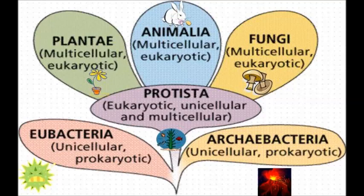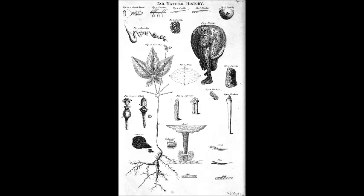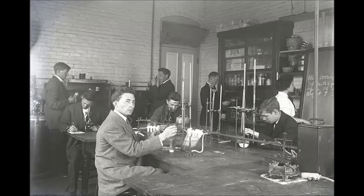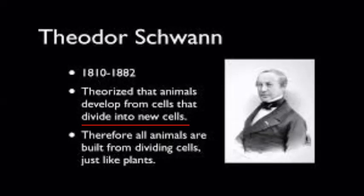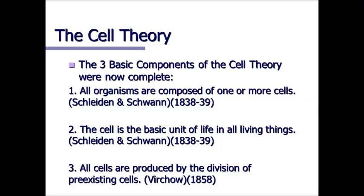In the 19th century, the cell held central importance as people started discovering and presenting their theories. The first major theory dates back to 1838, when Schleiden and Schwann, German biologists, presented their cell theory. It consists of three tenets: first, the cell is the basic unit of organisms; second, individual cells have all the characteristics of life; and third, the cell is a de novo structure — meaning it was considered a new thing, not pre-existing.